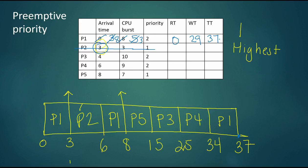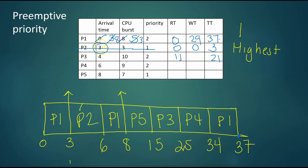P2 arrived at time three, got the CPU right away, never waited, and was active for exactly three time units — all on the CPU. P3 arrived at time four and eventually got the CPU at time 15, so P3's response time was 11. P3 finished at time 25, giving a turnaround time of 21. P3 spent 10 time units on the CPU and 11 time units waiting.